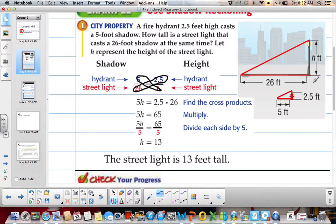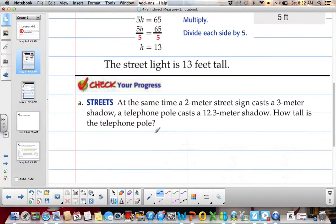Which would make sense. Hydrant is smaller than our shadow. Our street light is smaller than our shadow. So we always want to make sure that our answer makes sense.